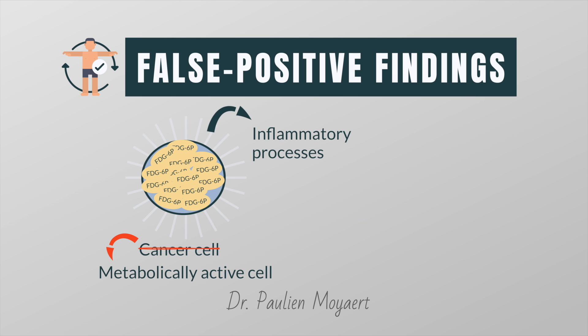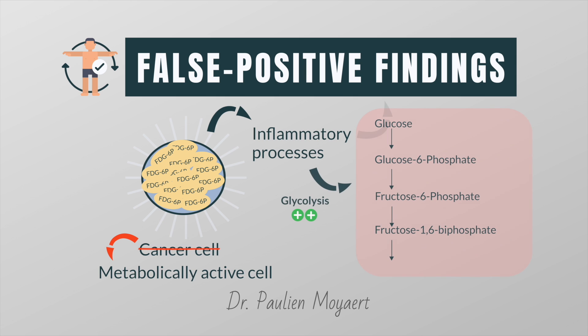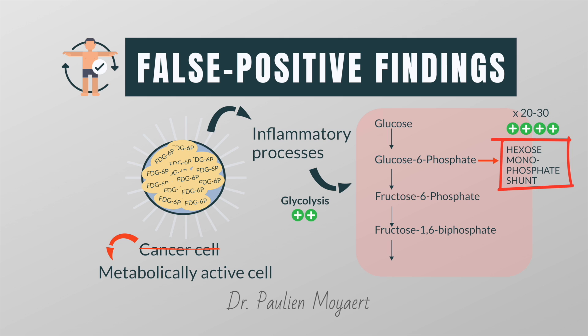A variety of inflammatory processes can also show significant FDG uptake, sometimes leading to false positive findings. Activated inflammatory cells, such as neutrophils, have markedly increased glycolysis. The hexose monophosphate shunt, an alternative pathway to glycolysis, is stimulated with increases of 20 to 30 times that of baseline values, and this causes the high FDG uptake.